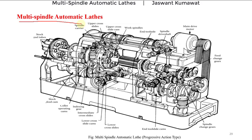In these automatic lathes, all the operations from feeding of bars to the unloading of the finished part are done automatically — that means these are fully automatic lathes. The automation may be of fixed type or programmable. Having a number of spindles is why multi spindle automatic lathes are the fastest production lathes. The diagram shown here is of multi spindle automatic lathes of the progressive action type.